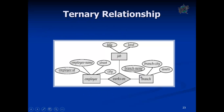Ternary relationship means when three entities participate in a relationship. For example, employee works on branch or job — employee works on job and employee works on branch. Employee has employee ID, employee name, street, and city. Branch has branch name, branch city, and assets. Job has title and level. All primary keys are underlined to identify the primary key of each entity: in branch, branch name is the primary key; in job, title is the primary key; and in employee, employee ID is the primary key.